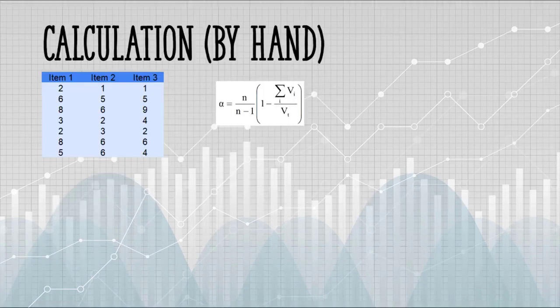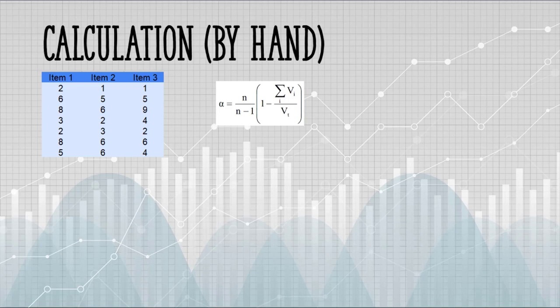On the left, I have a list of items I want to find alpha for. The formula is on the right. N is the number of sets of items. We have three groups of items. Then inside the parentheses, we have 1 minus the sum of all the sample variances. Sigma notation there just means add everything up. So here we have to find the sample variances.